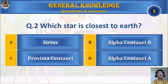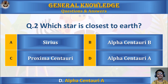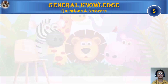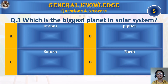Question 2: Which star is closest to Earth? A. Sirius, B. Alpha Centauri B, C. Proxima Centauri, or D. Alpha Centauri A? Your time starts. The answer is D. Alpha Centauri A.